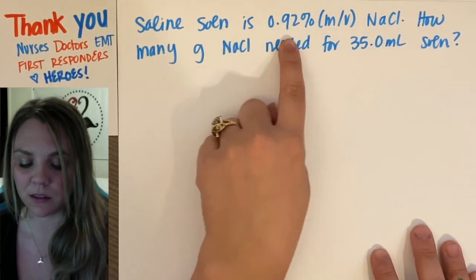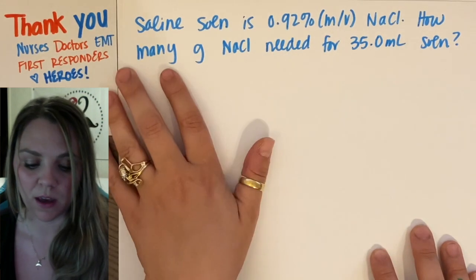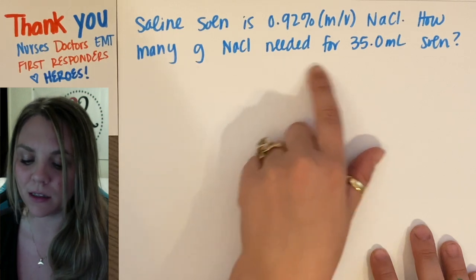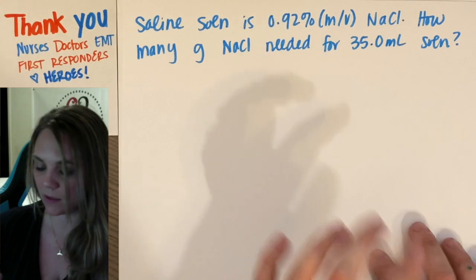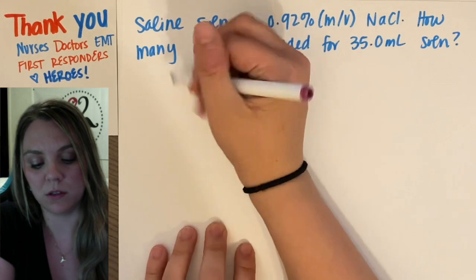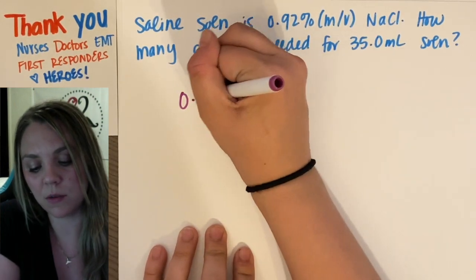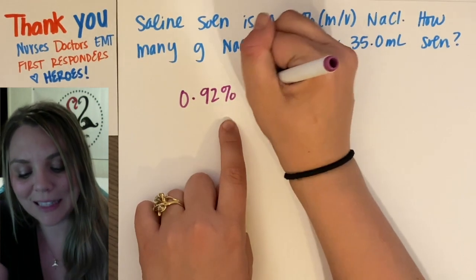So a saline solution is 0.92 percent mass by volume of sodium chloride. How many grams of sodium chloride are needed for a 35 milliliter solution? So you just set it up the exact same way.